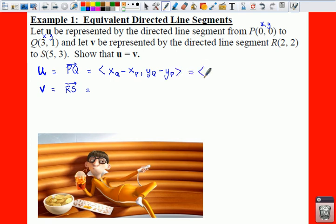Let's just plug in our numbers. We're going to say 3 minus 0, that's your X value, and then we're going to take 1 minus 0. When you do that, you're going to get the vector 3, 1.